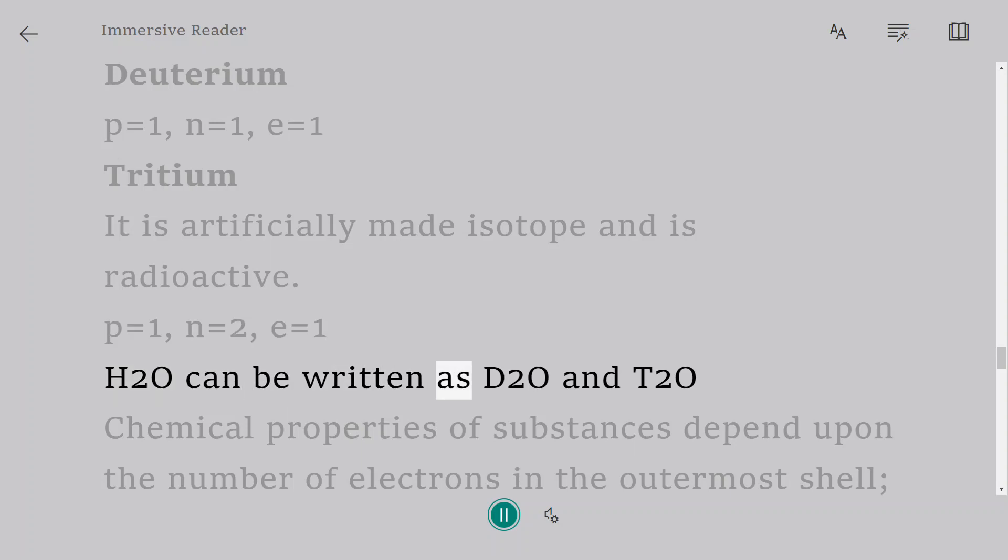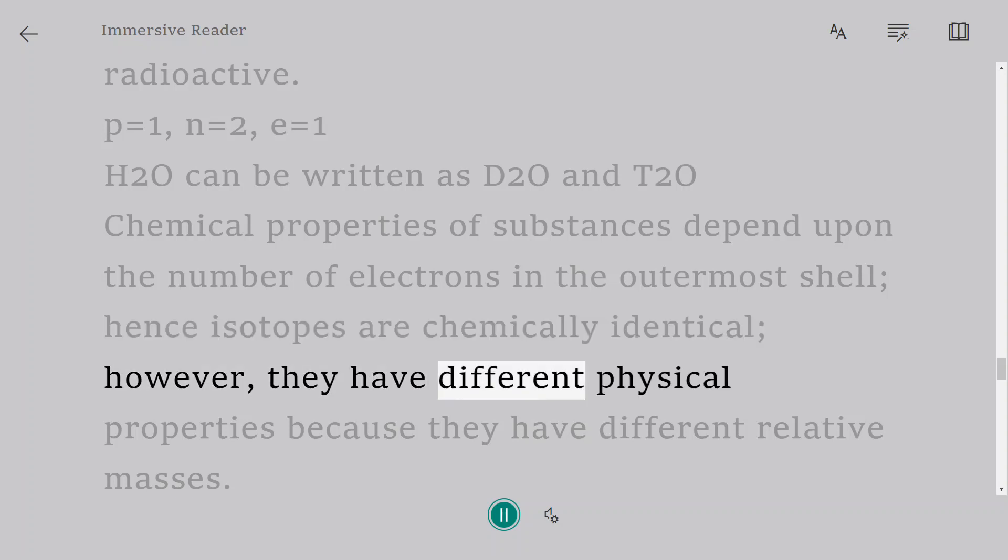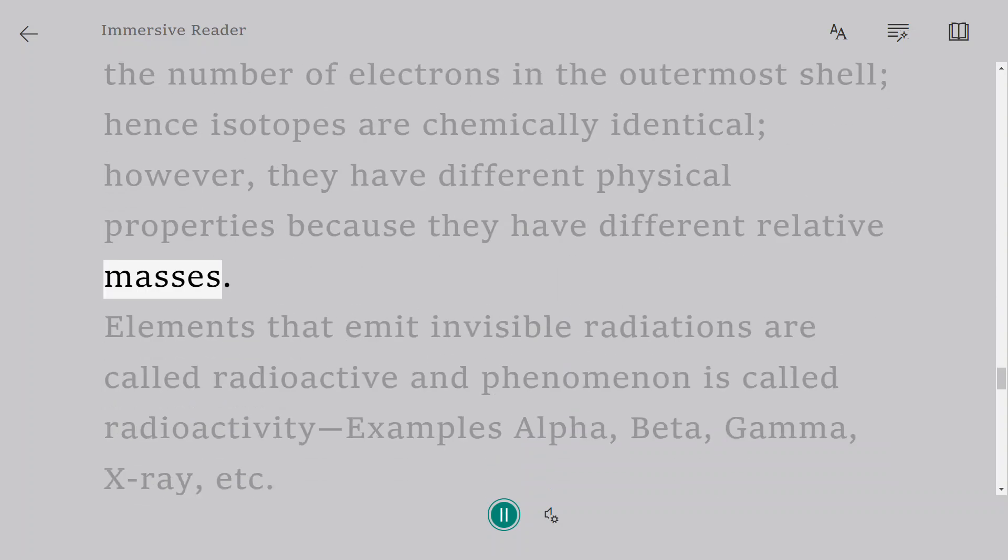H2O can be written as D2O and T2O. Chemical properties of substances depend upon the number of electrons in the outermost shell; hence isotopes are chemically identical. However, they have different physical properties because they have different relative masses.